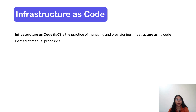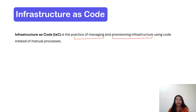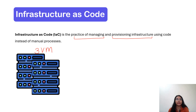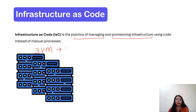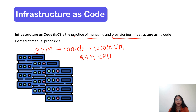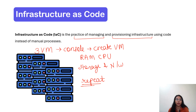Infrastructure as a code — so what is infrastructure as a code? Infrastructure as a code is the practice of managing and provisioning infrastructure using code instead of manual processes. For example, if you want to create three virtual machines, you will have to log in to the console, click on create virtual machine, then configure details like RAM, number of CPUs, storage, and networking details. Your virtual machines will get created, but if you want more, you would have to repeat the whole procedure — this is the manual work.